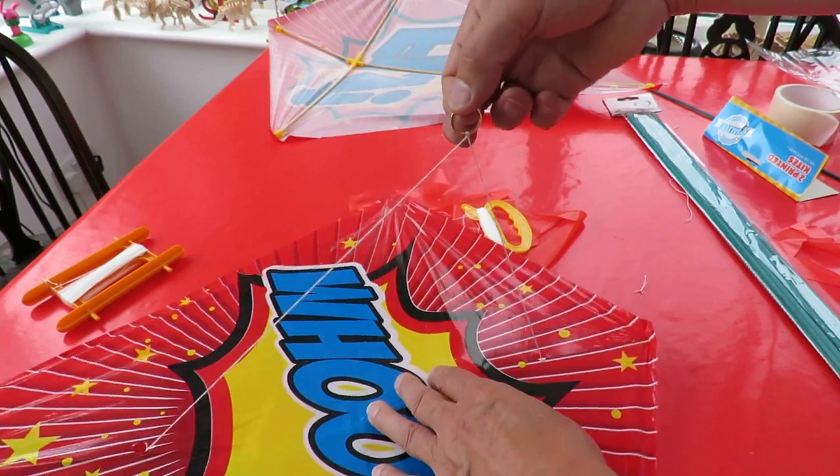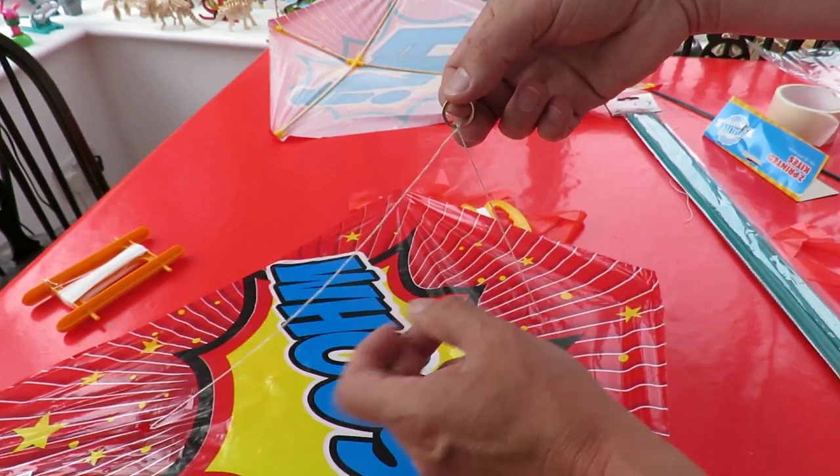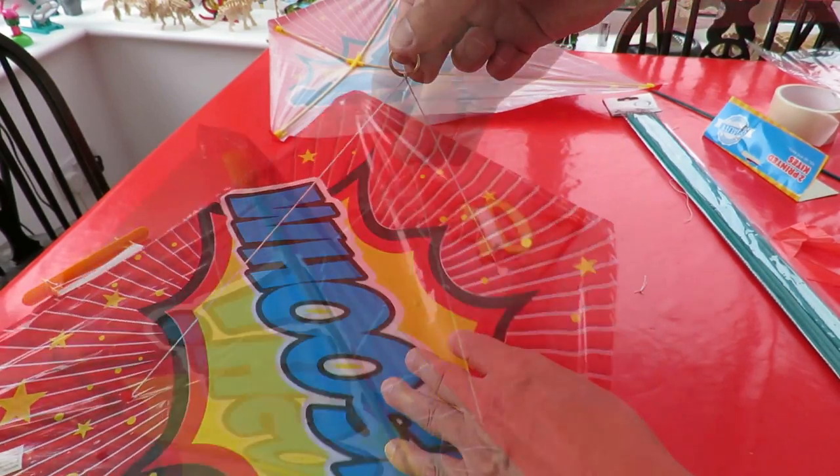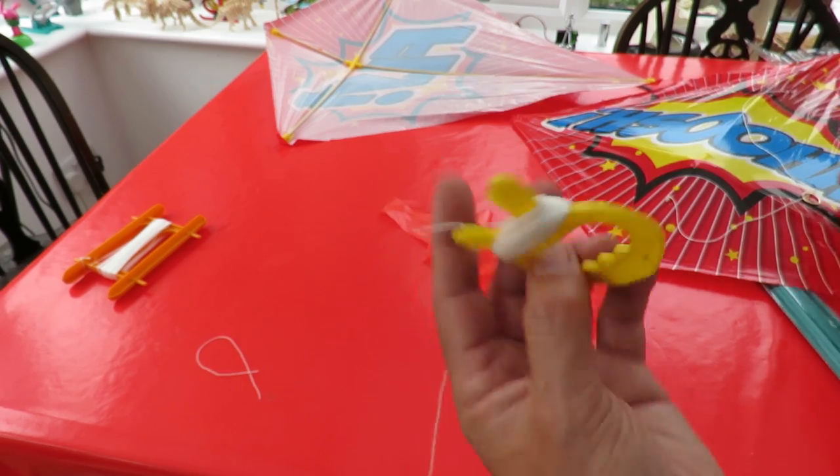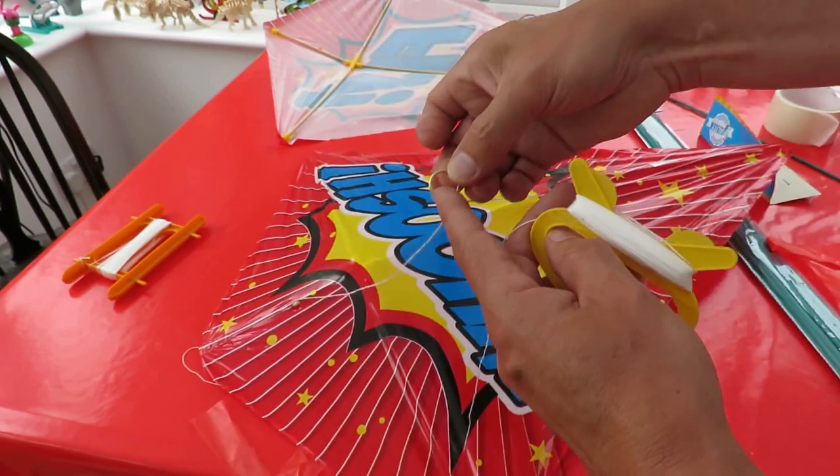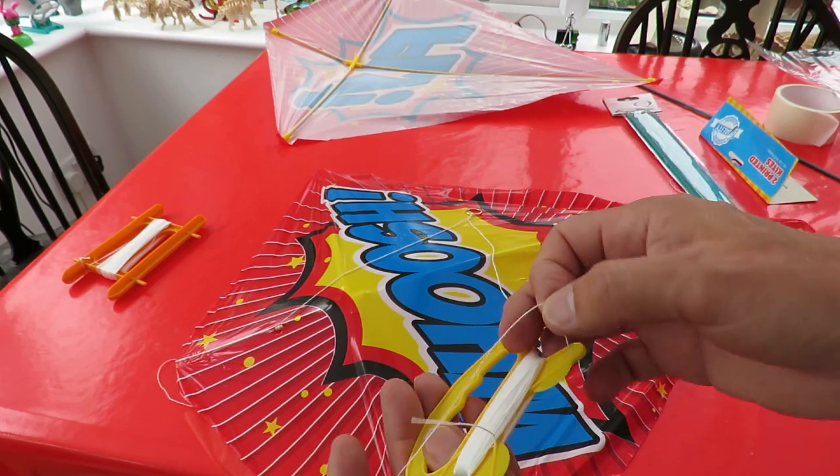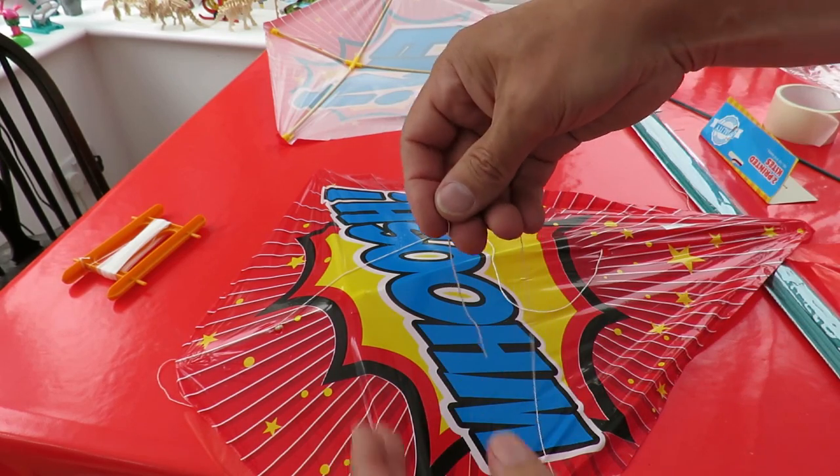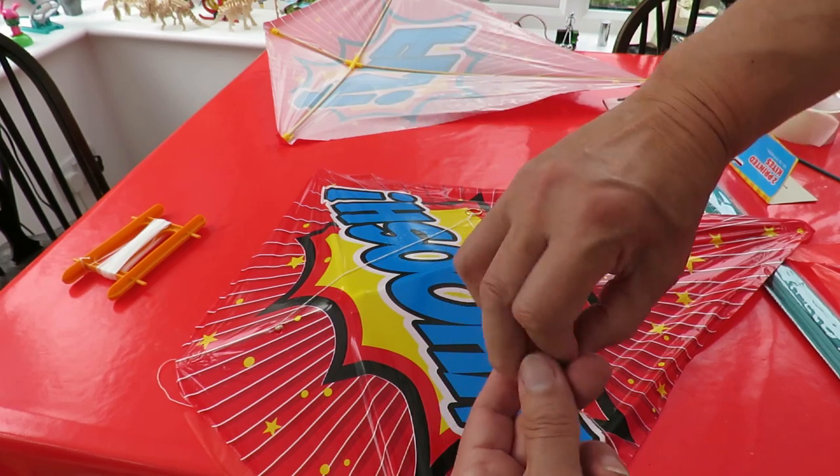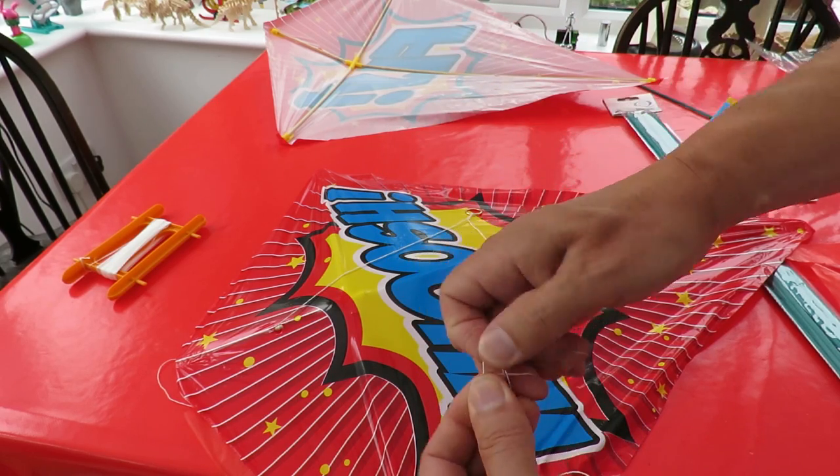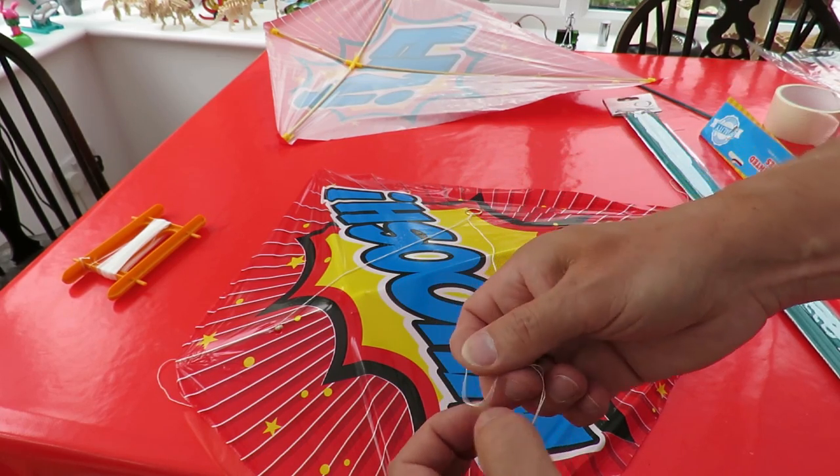So that's how I intend to adjust the angle of attack. Next thing is how do we attach the line to that? What I would suggest is just tie a loop in this, a nice big loose loop like that. And then you've got two choices.